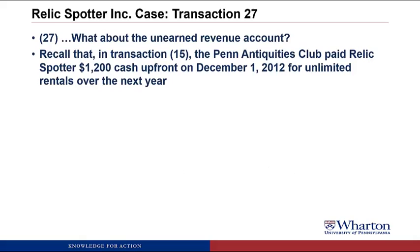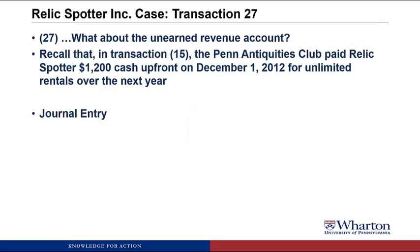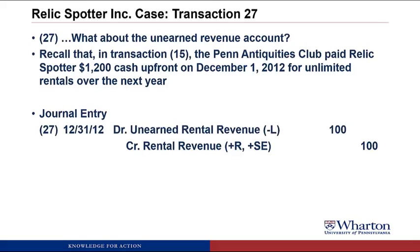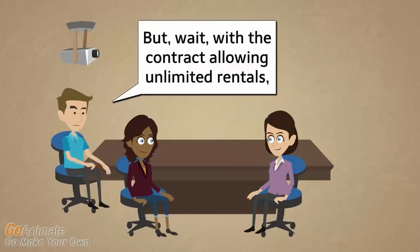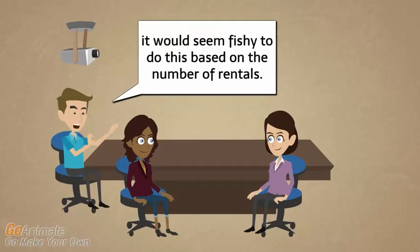Transaction 27. The accountant asked, what about the unearned revenue account? Recall that in transaction number 15, the Penn Antiquities Club paid RelicSpotter $1,200 cash upfront on December 1st, 2012 for unlimited rentals over the next year. We need an adjusting entry here to recognize the revenue we've earned by providing one month of unlimited rentals, so we credit rental revenue for $100. Part of our obligation has gone down by delivering one month of unlimited rentals, so we need to reduce our liability. We debit unearned rental revenue to reduce this obligation. The $100 comes from $1,200 upfront for a full year — one twelfth of a year has gone by, so we only recognize $100 of that $1,200 during the first month. Could this revenue be recognized based on the number of rentals instead of time? With the contract allowing unlimited rentals, it would seem fishy to do this based on the number of rentals.